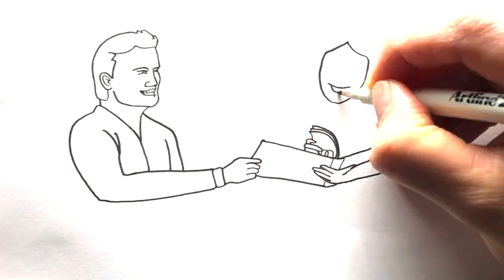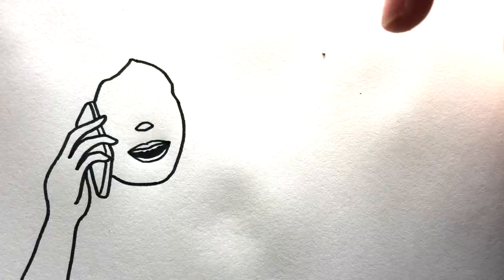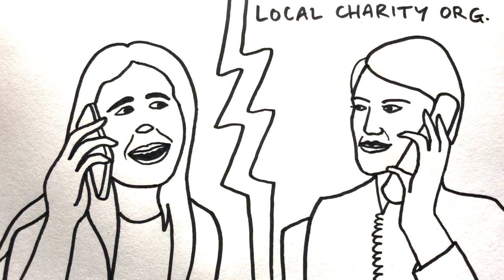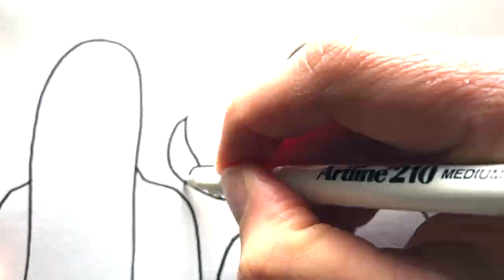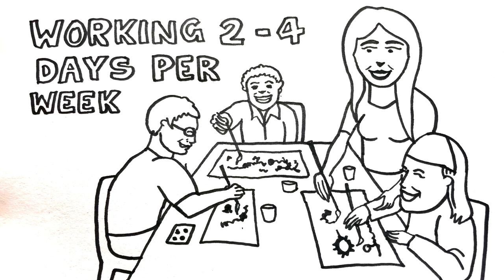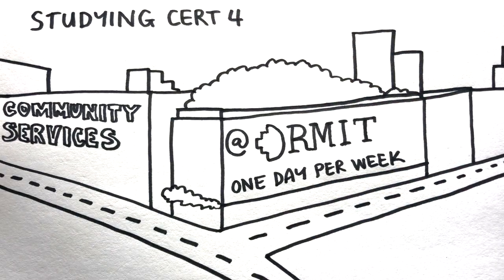Her youth worker shared the Community Traineeship Program with her and she was immediately interested. Through the program, her youth worker helped her get in touch with a large charity organisation who have a disability care arm. After being interviewed for a position, Ellie started with the organisation, working there four days per week while studying a Certificate IV in Community Services at RMIT one day per week.